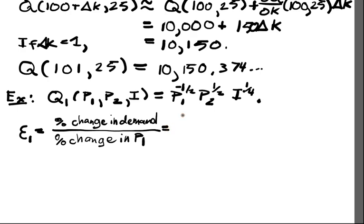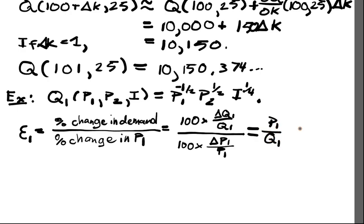So in order to measure elasticity, we're going to say that E1 is the percent change in demand divided by the percent change in P1. That's equal to 100 times delta Q1 over Q1 divided by 100 times delta P1 over P1.